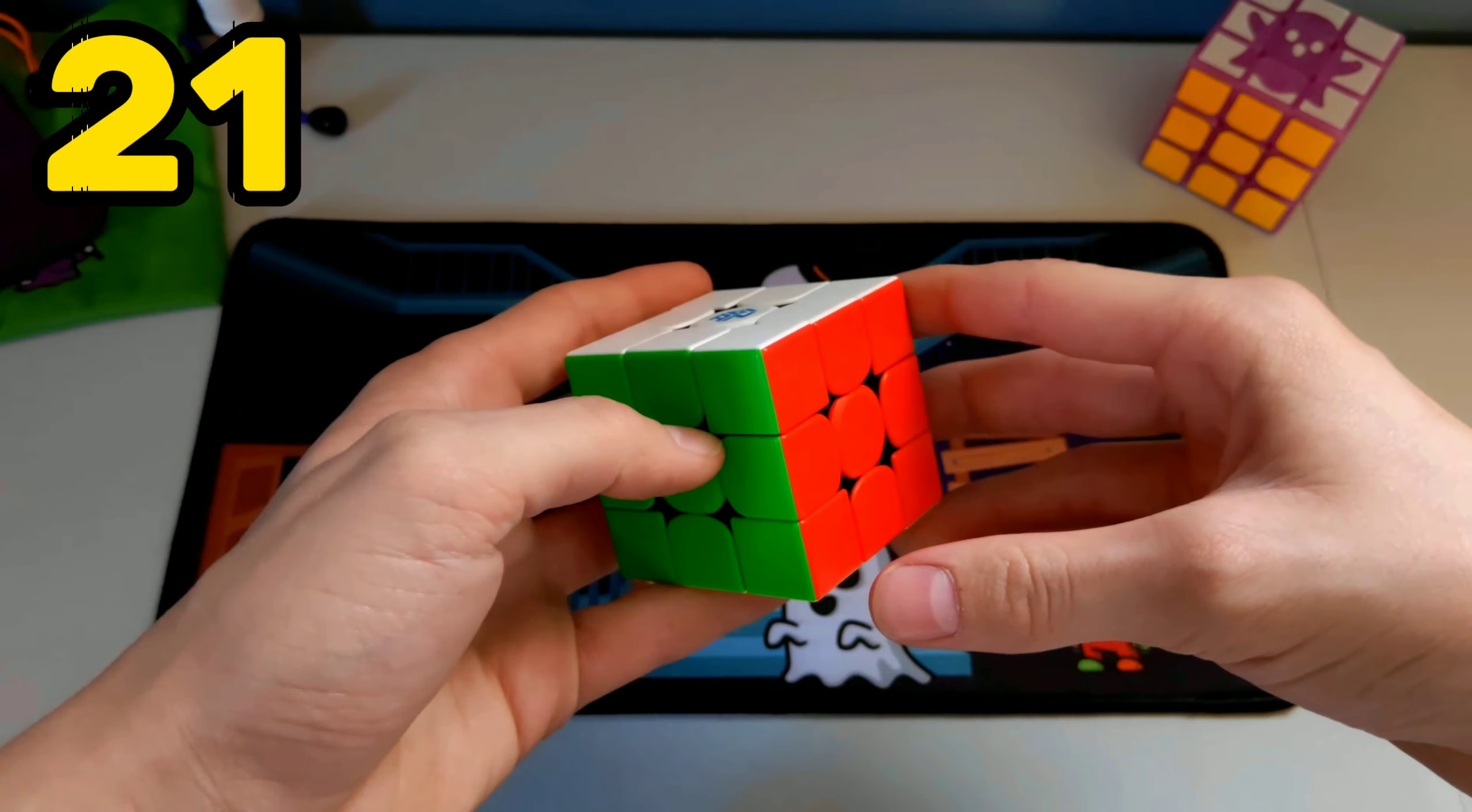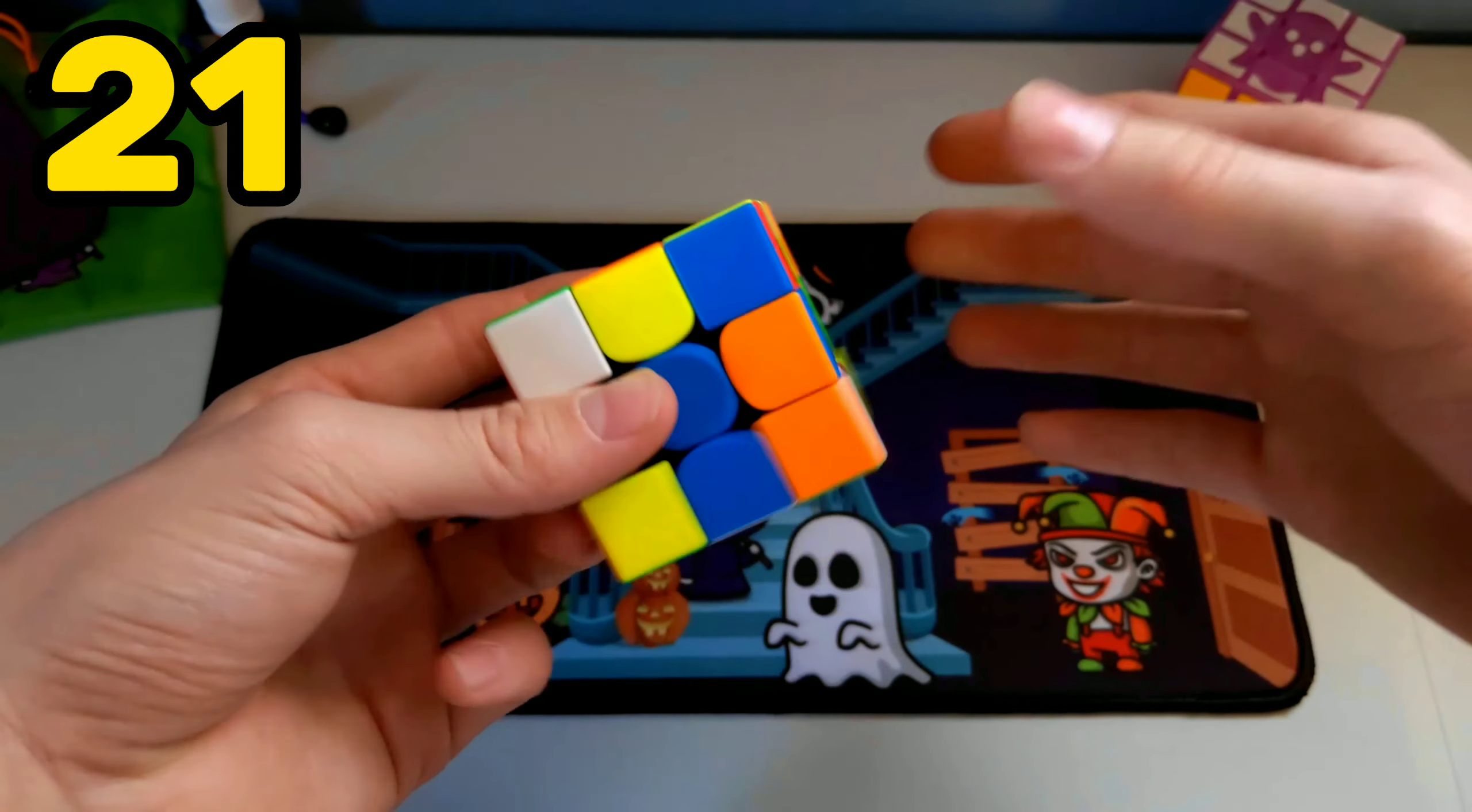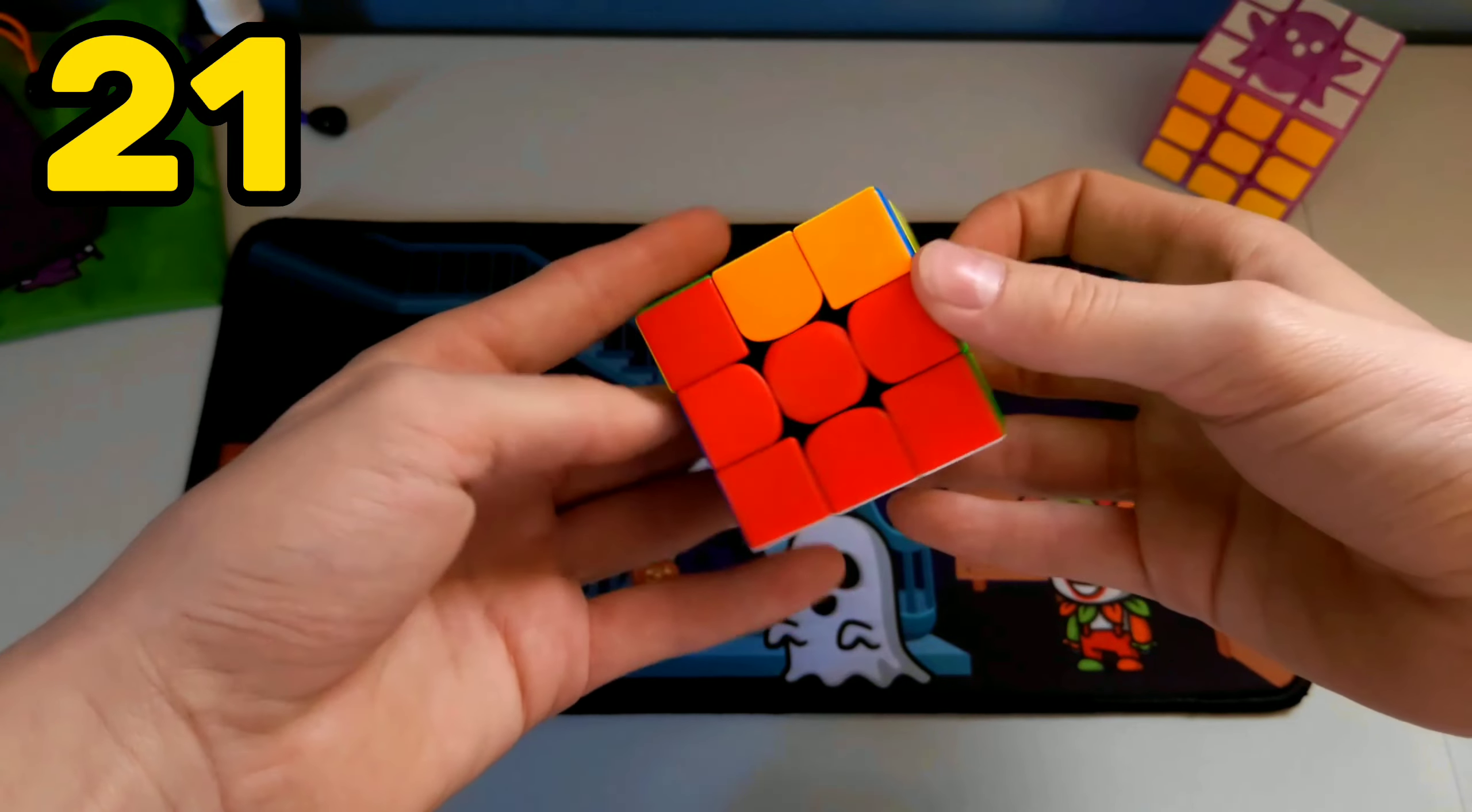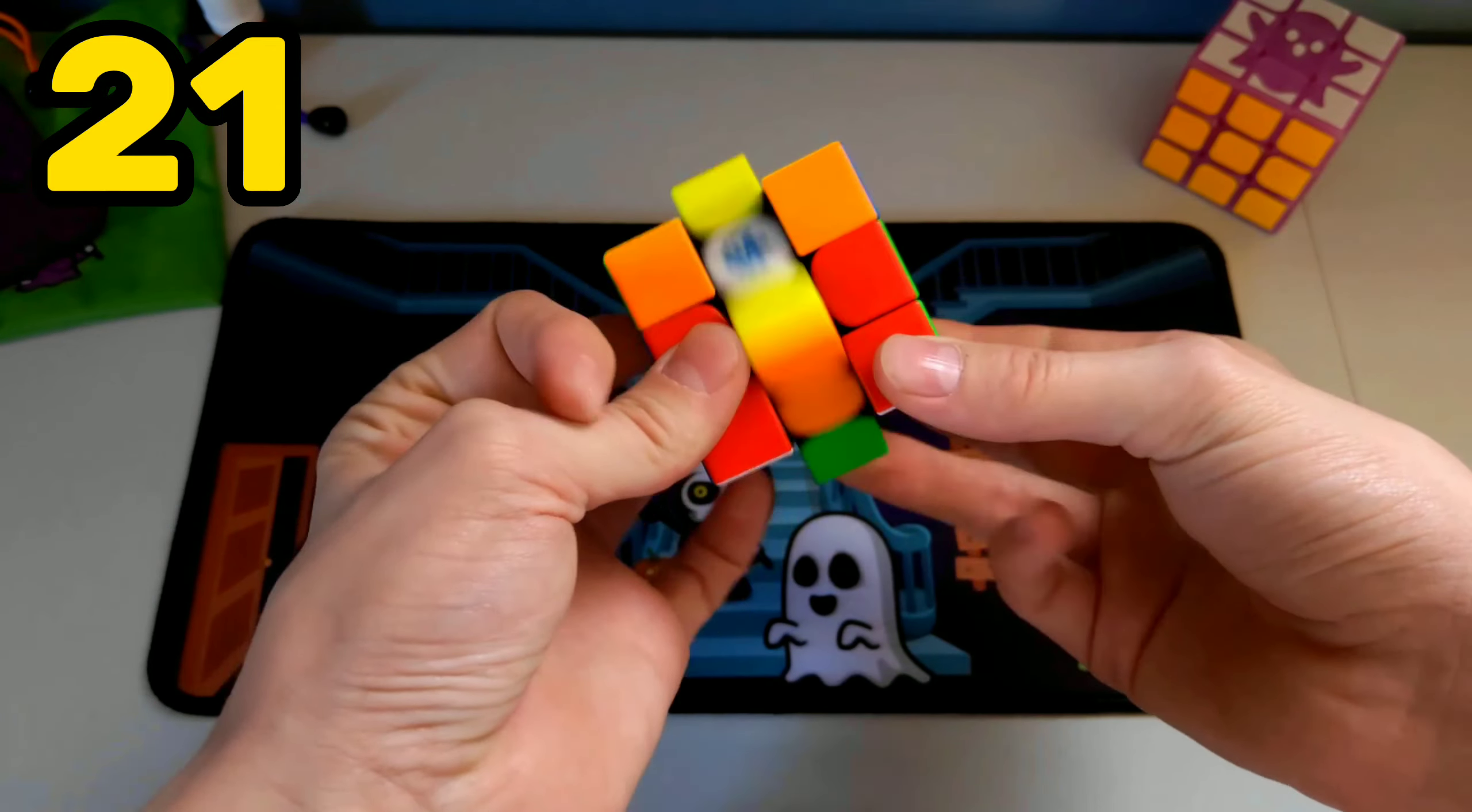The 3x3 is actually very simple, but most people don't see that. The first step is solving a white cross. The second step is solving the first two layers. And then finally, you only need a few algorithms to solve the last layer.